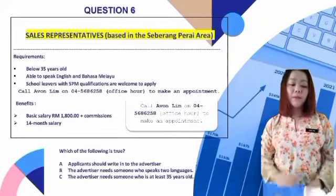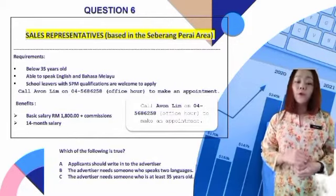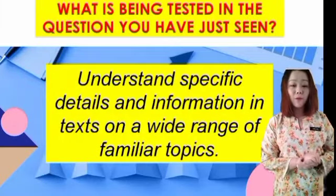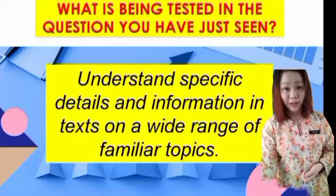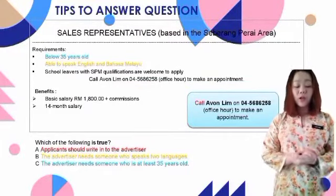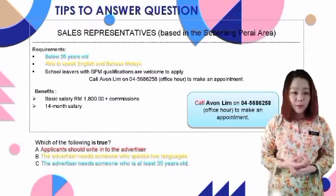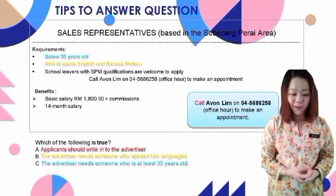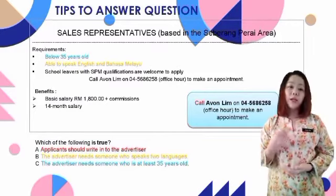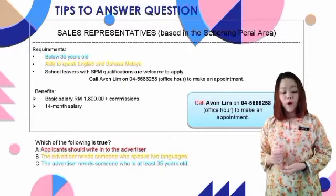The next question is about a job vacancy for sales representatives. The question asks: which of the following is true? This tests whether you understand specific details and information. Option A: applicants should write in to the advertiser. However, from the text, they would like you to call instead of writing. Therefore, option A is incorrect. Option B: the advertiser needs someone who speaks two languages. From the text, you can see 'able to speak English and Bahasa Melayu.' Therefore, option B is correct.